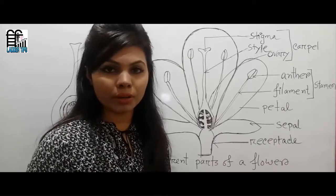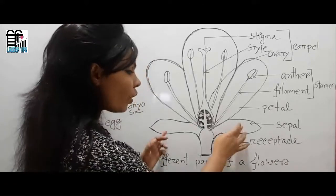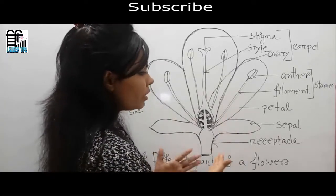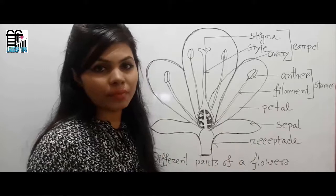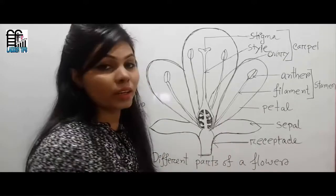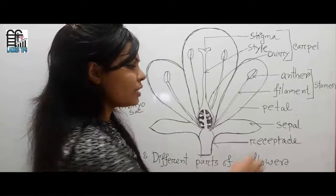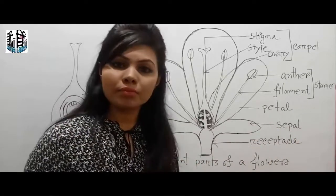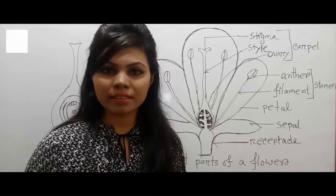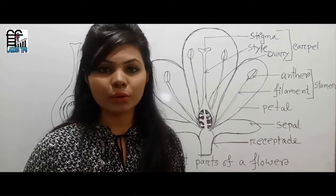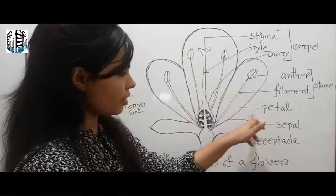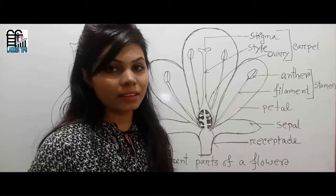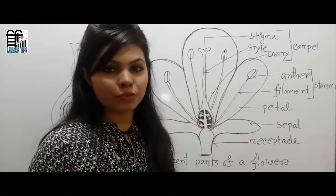Sepal is the outermost whorl of a flower. It may be joined or segmented, and sepals protect the flower during the budding stage. Sepals are usually green and leaf-like, and are collectively known as the calyx. Some flowers have an epicalyx below the calyx, like China rose.